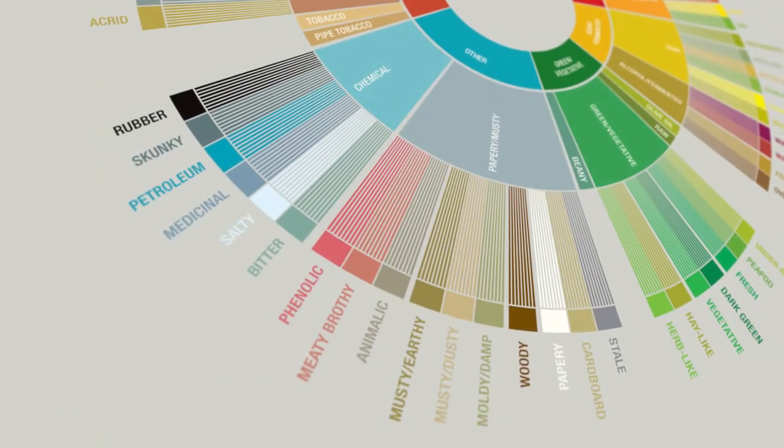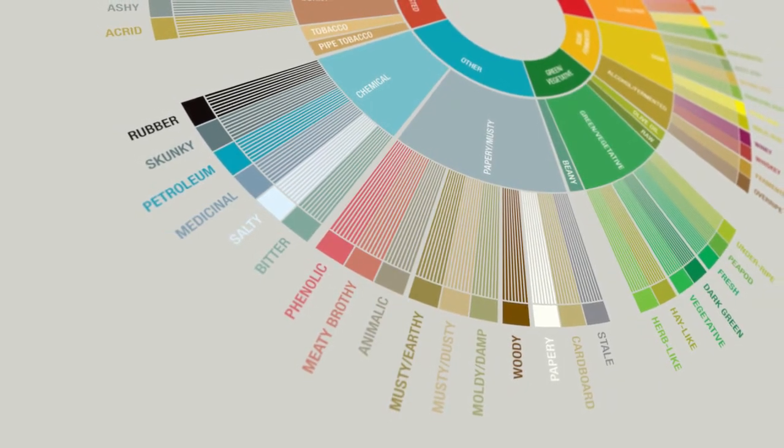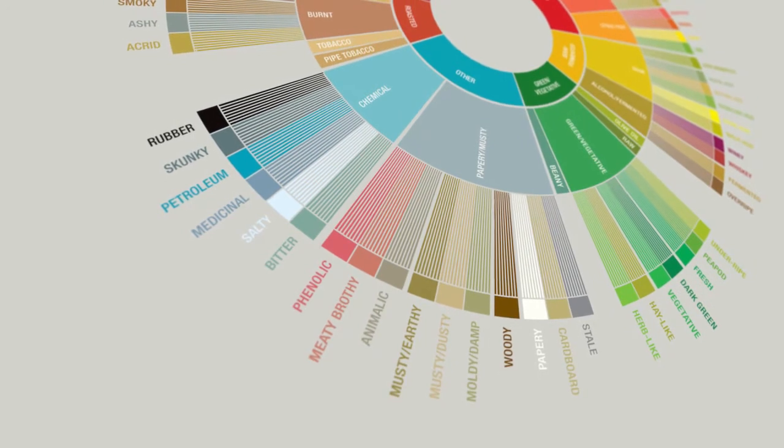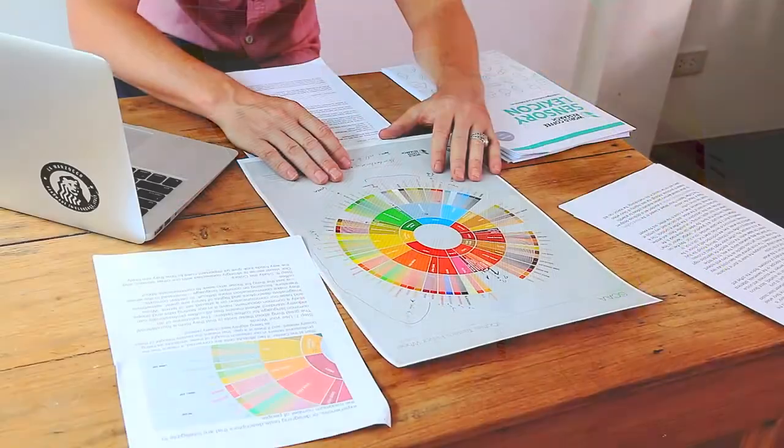One important thing to notice is that some descriptors have no gap between them, meaning the research found them closely related. A small gap means less related; a large gap means even less related. Also, this wheel does not directly say which flavor attributes are good or bad — partly because the Sensory Lexicon didn't either. However, for most cuppers we can generally assume that anything in the blue 'Other' area — the chemical and paper/musty descriptors — is not going to be a positive descriptor for coffee.